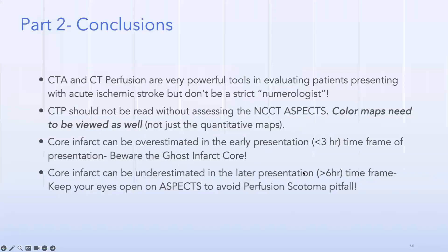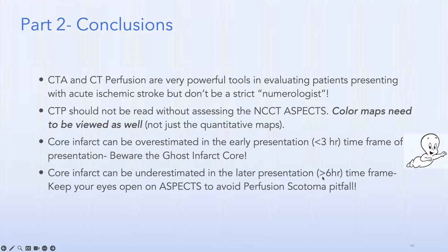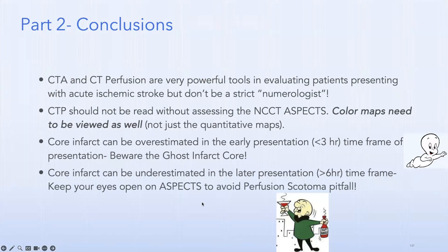Conclusion: CTA and CT perfusion remain powerful tools for evaluating acute ischemic stroke, but don't be a strict numerologist — in practice you need leeway. CT perfusion should not be read without assessing the ASPECTS score; qualitative color maps must be viewed alongside quantitative maps. Core infarct can be overestimated in early presentations — beware the ghost infarct core. Core infarct can be underestimated in later presentations (>6 hours) especially with an abnormal ASPECTS — beware the perfusion scotoma pitfall.